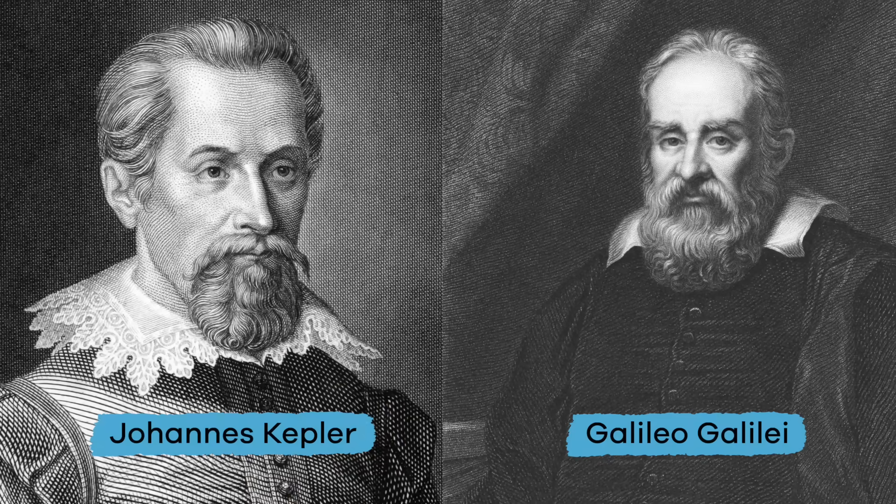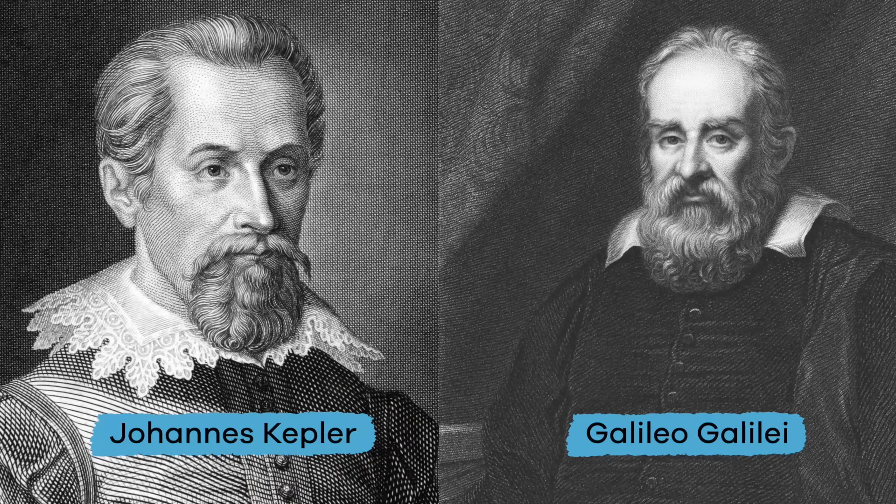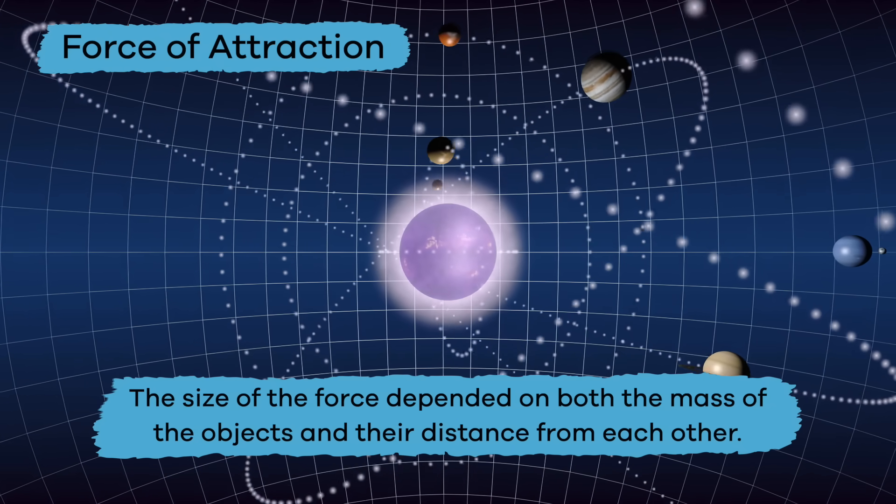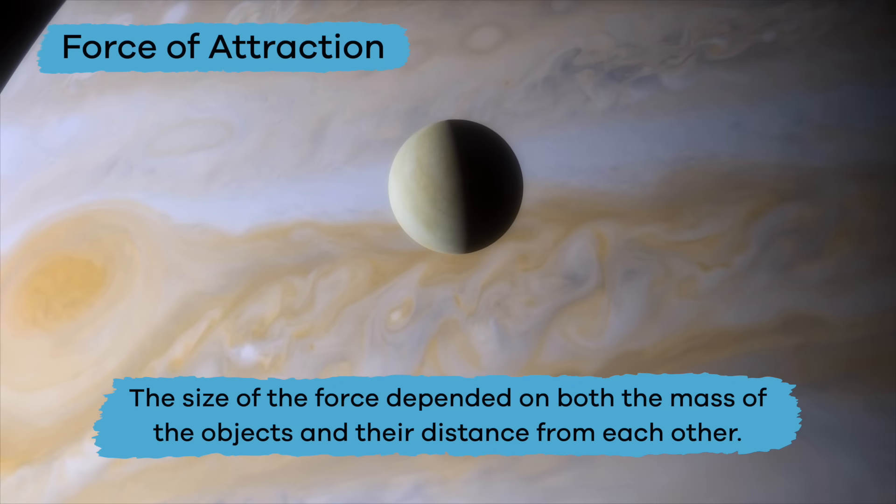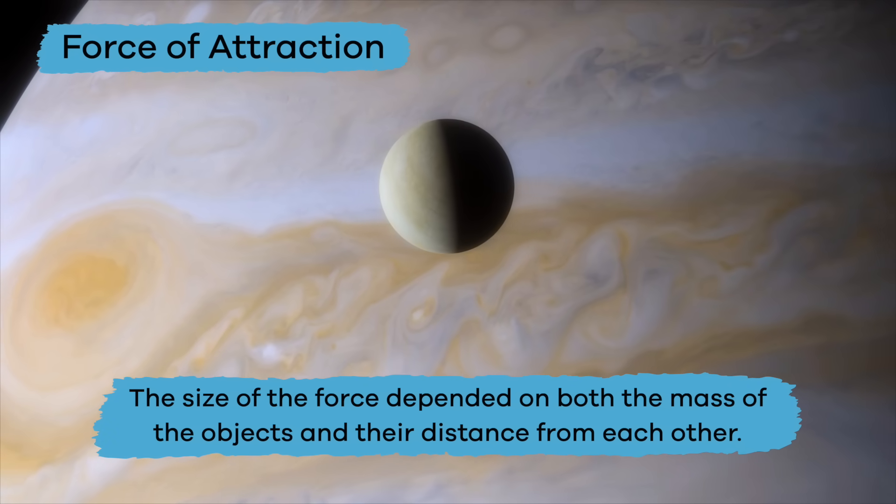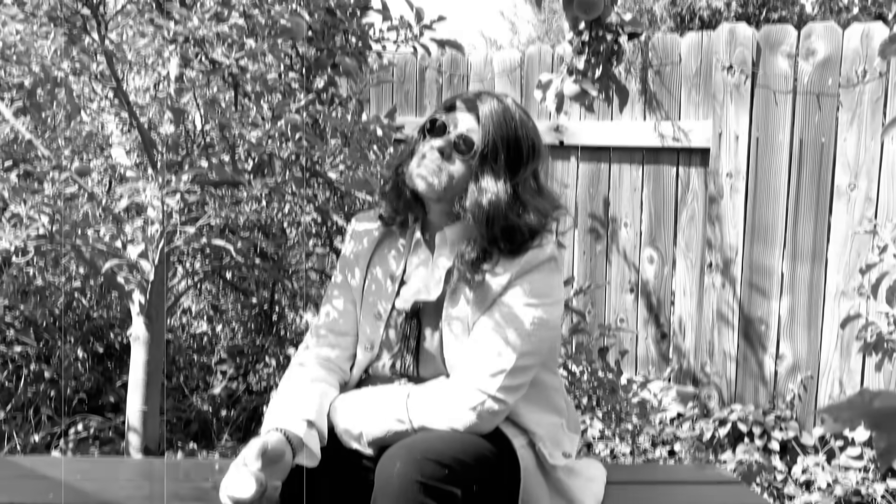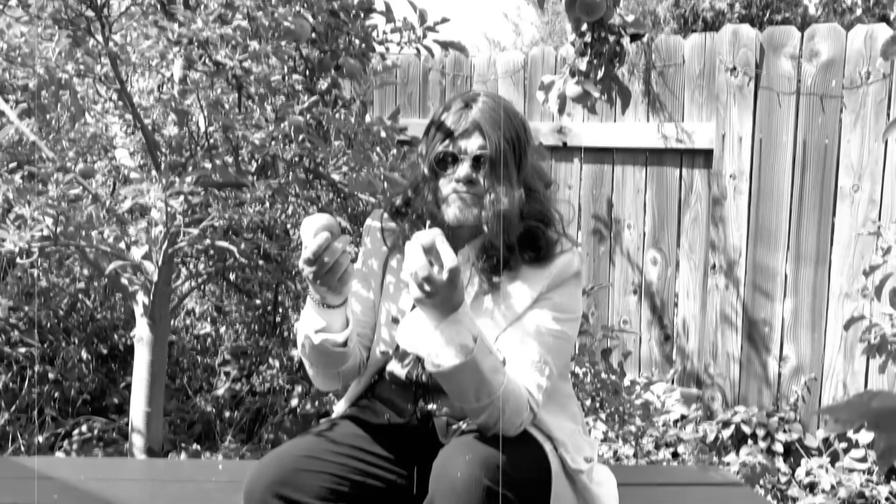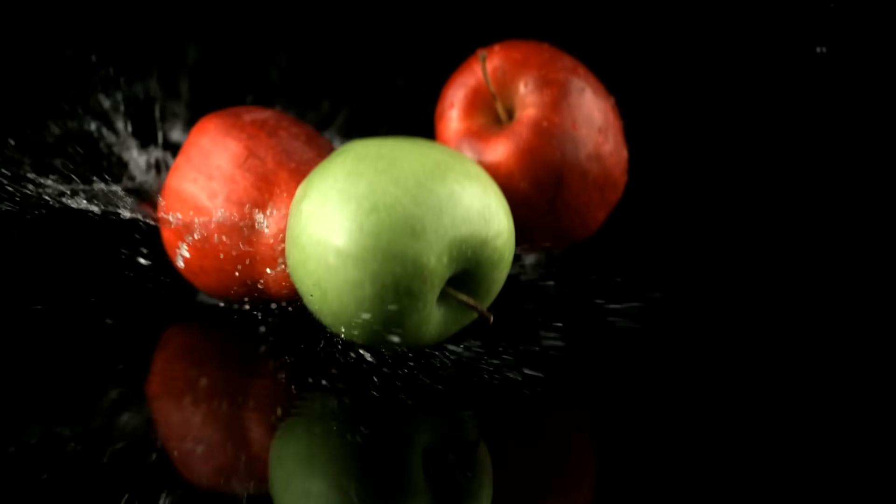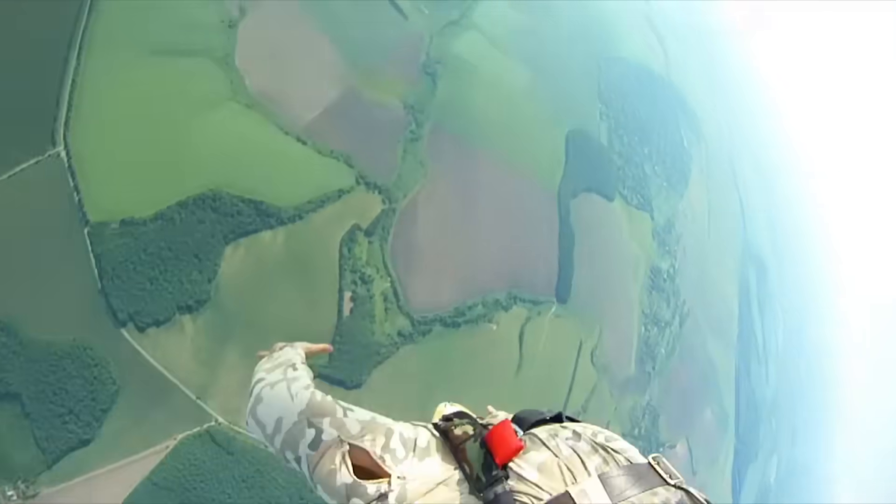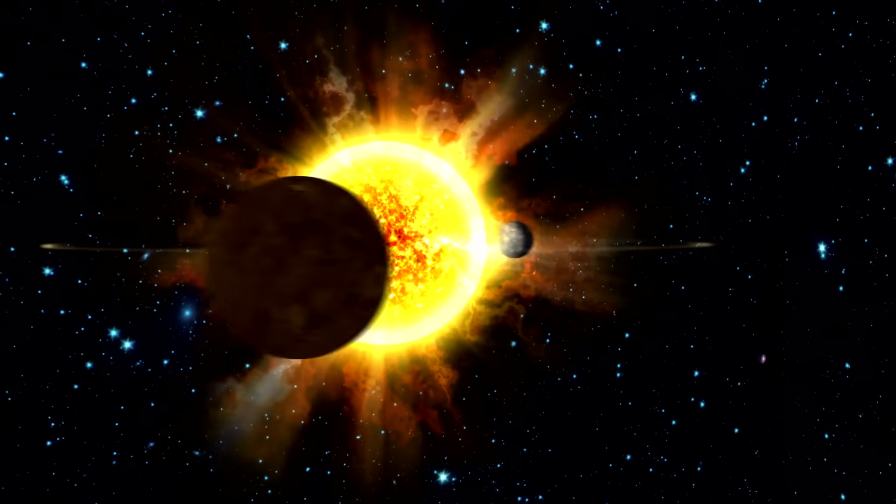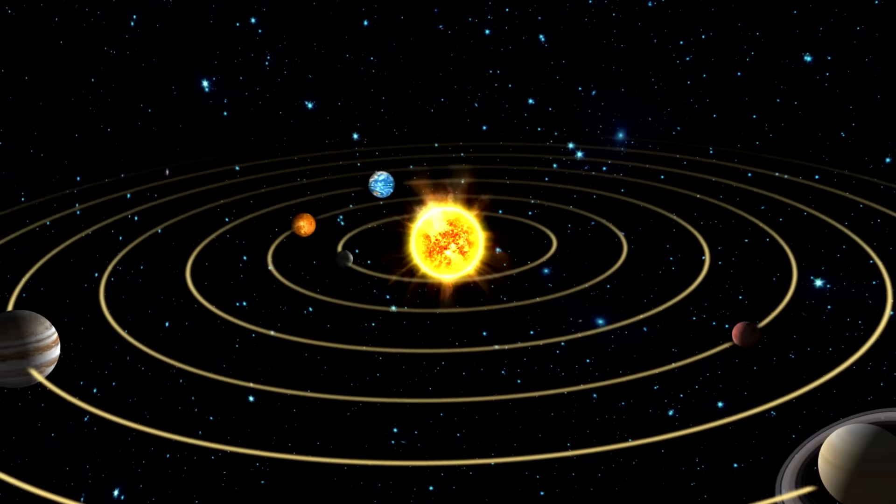First up is Sir Isaac Newton. He studied the work of other scientists and realized that gravity was a force of attraction and that the size of the force depended on both the mass of the objects and their distance from each other. Sir Isaac Newton is the scientist who watched an apple fall from a tree and realized that there was a force at work. Newton wondered why the apple falls straight to the ground and not sideways. He realized that the force that makes objects fall to Earth and the force that keeps the planets in their orbits are the same force.